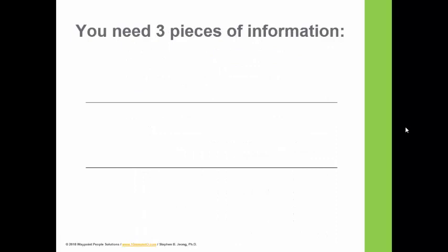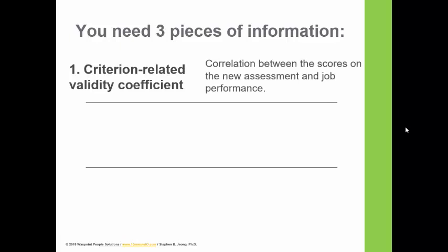Before we do that, we need three pieces of information. The first is what's called the criterion-related validity coefficient. It sounds fancy, but it's simply a correlation between scores on the test and job performance. Imagine you have 100 people take the assessment, you get a range of scores, you hire all 100, follow them over a 12-month period, then obtain their performance evaluation scores and correlate the two sets.